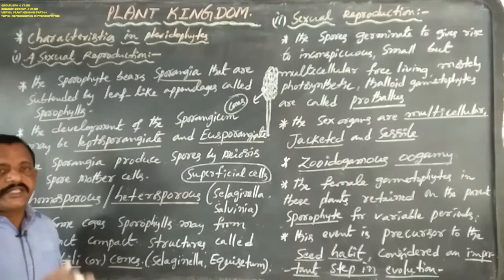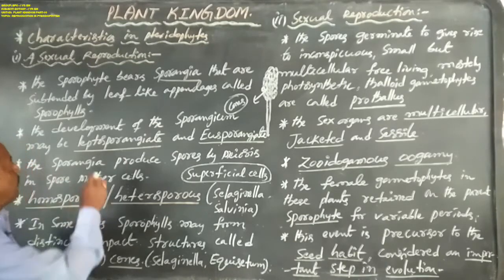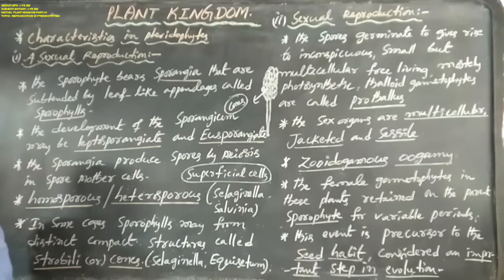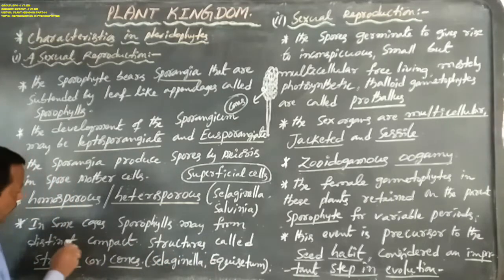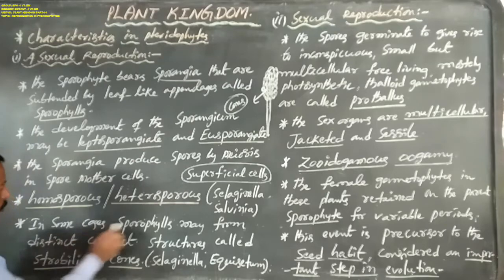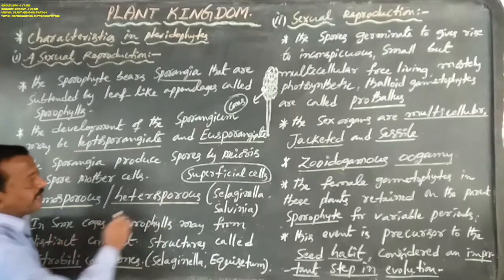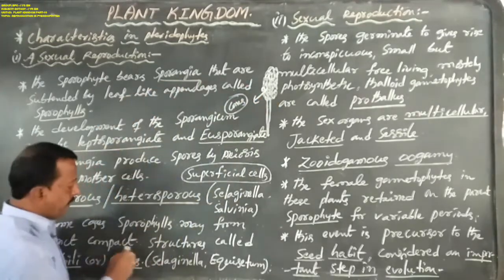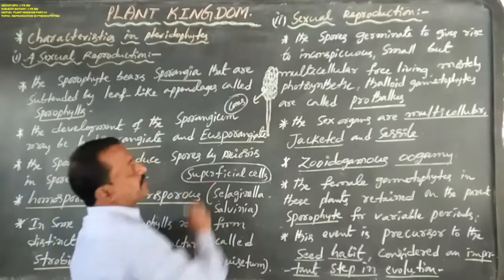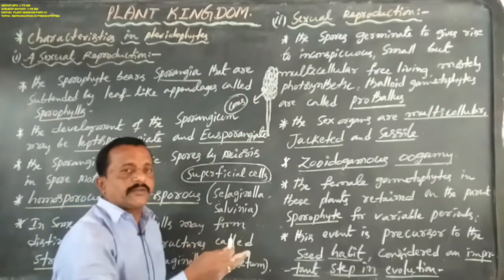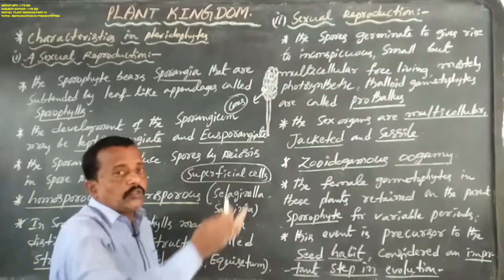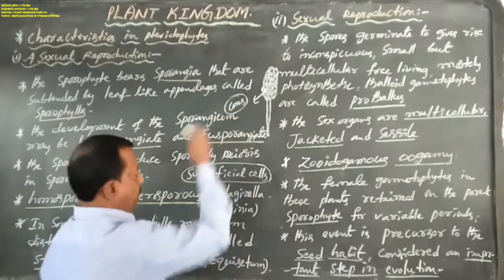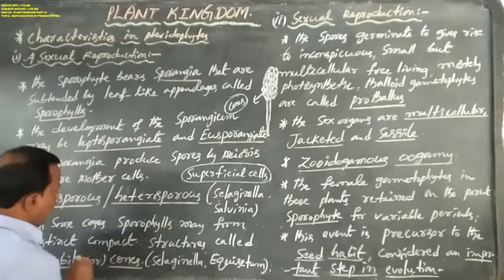Dear students, in pteridophytes the sporophylls may form distinct compact structures where sporophylls are closely packed. That structure is called strobili or cones, with examples being Selaginella and Equisetum.